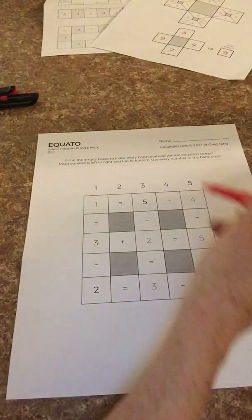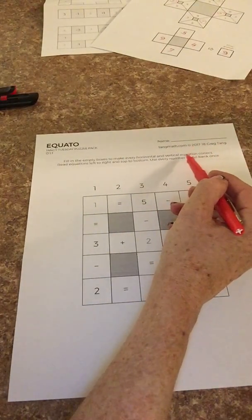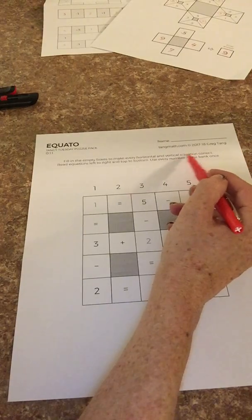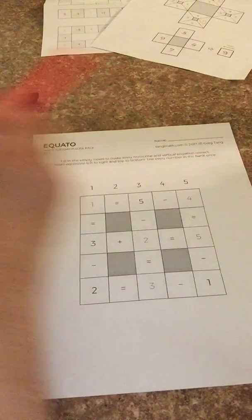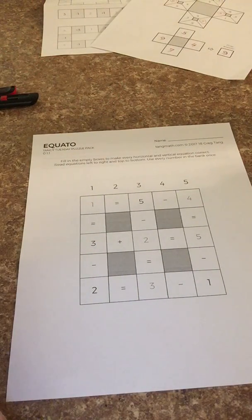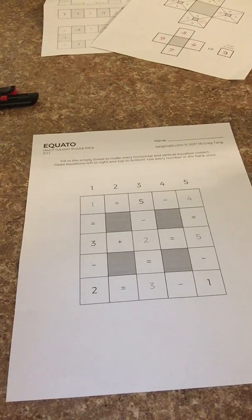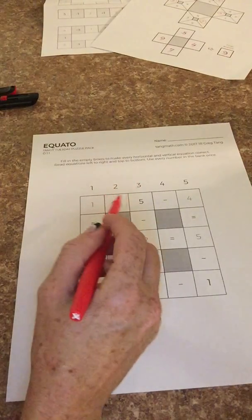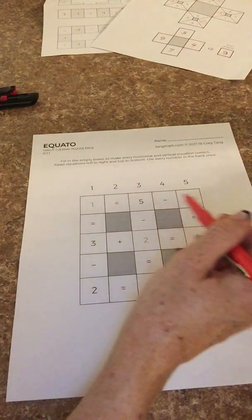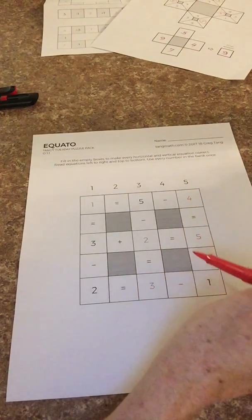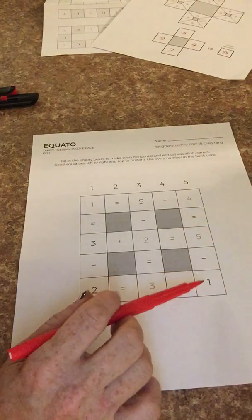You're gonna fill in the empty boxes to make every horizontal and vertical equation correct. An equation is a good word to review and we do it in school a lot and at home. It's the same as number sentence or number model which are the terms our math program uses at school.